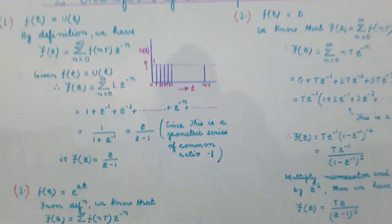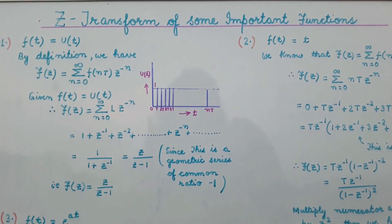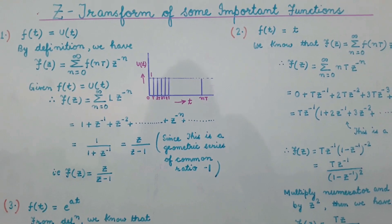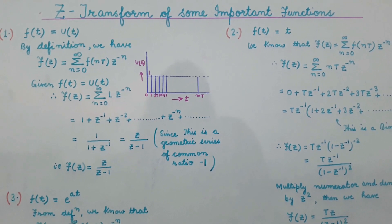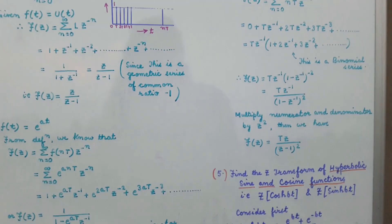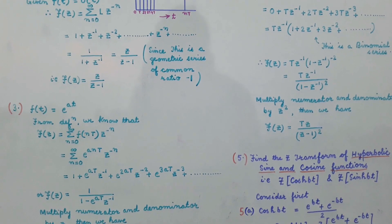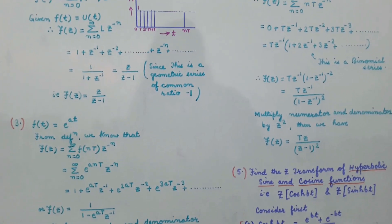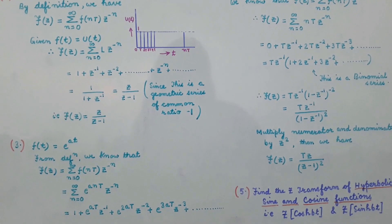These are the Z transforms of some important functions. In this class, we derived the Z transform of the unit step function u(t), the Z transform of the ramp function t, the Z transform of e^(at), the Z transform of cos(ωt) and sin(ωt), the Z transform of cosh(bt) and sinh(bt). We will discuss the Z transforms of further functions in another presentation.